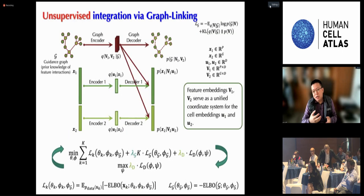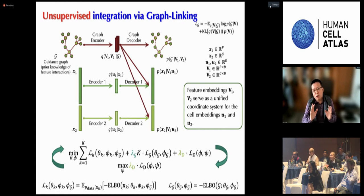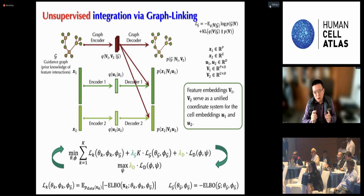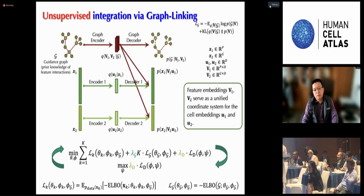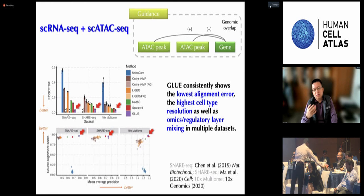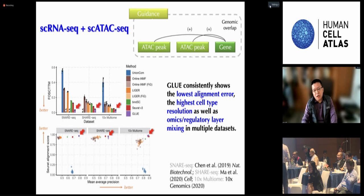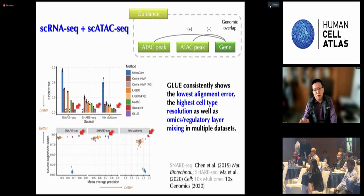Mathematically, in addition to the generative architecture we used before, we incorporate a graph component to model interactions across regulatory layers, each with a distinct modality. The graph itself can be used as both regularization and a scaffold for integrative regulatory inferences. The model works well for regular two-omics integration, consistently showing the lowest alignment error as well as higher cell-typing resolution.